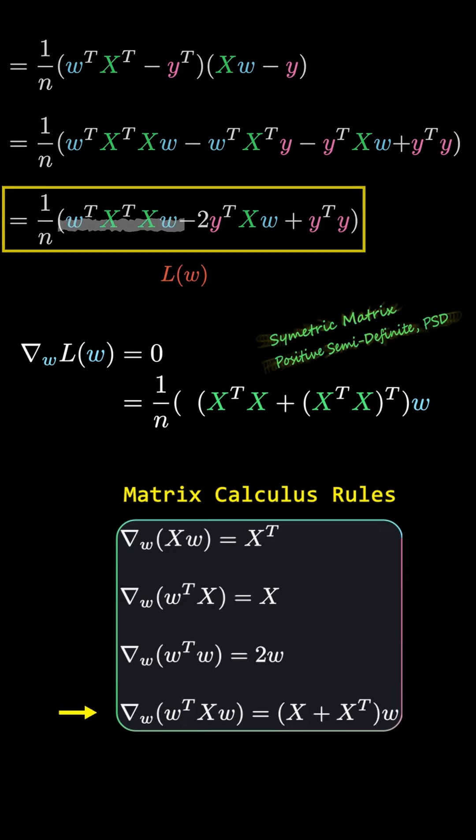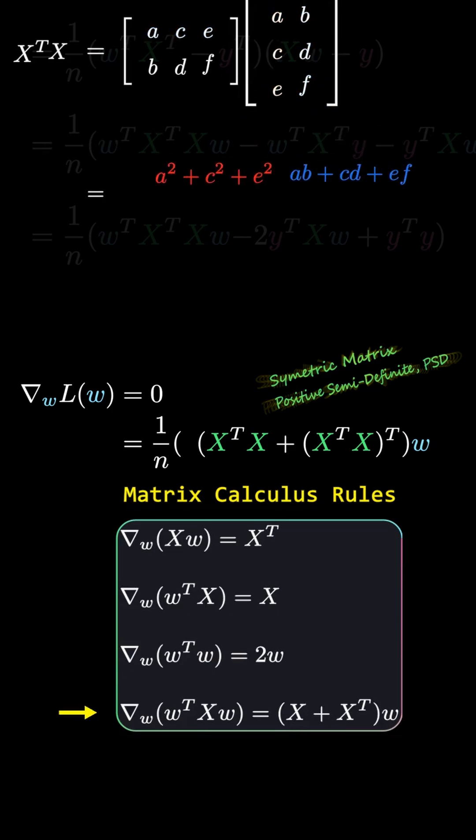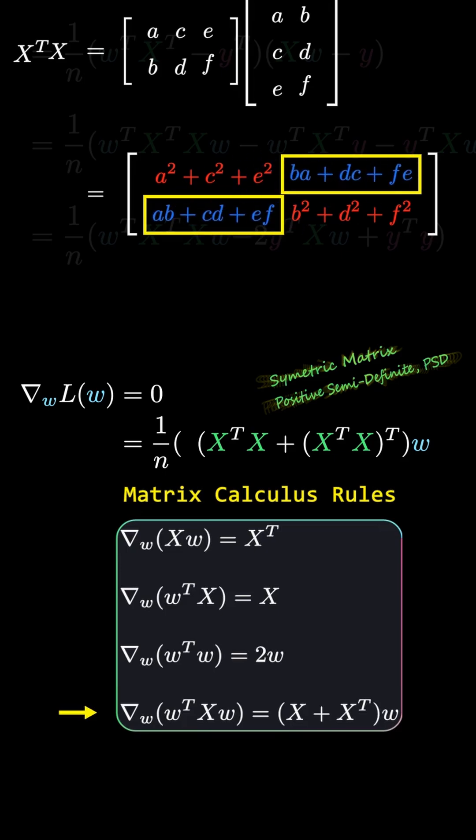Let's first see what symmetric means. If X is a 3 by 2 matrix, then X transpose X is a 2 by 3 times a 3 by 2 matrix, so the result is 2 by 2. And as you can see here, the blue parts are identical, so transposing it gives the same matrix. That's what we call a symmetric matrix.